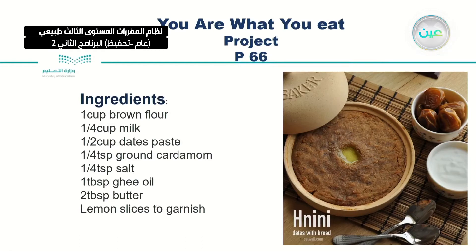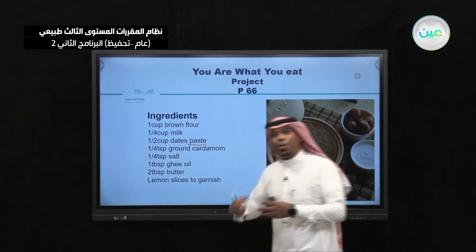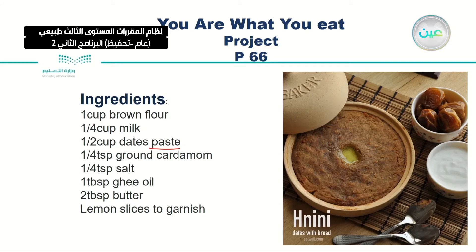These are the ingredients for Hineni, as you can see: one cup brown flour, quarter cup milk, half cup dates paste — 'paste' means it's in liquid form. Then quarter teaspoon — TSP means teaspoon — ground cardamom. Quarter teaspoon salt, one teaspoon ghee oil, two tablespoons butter, and finally one lemon slice for garnish. This is the final ingredient list for Hineni, as you can see here.